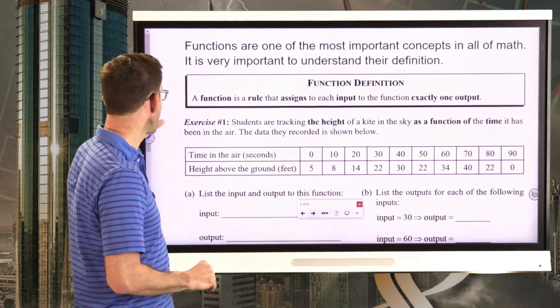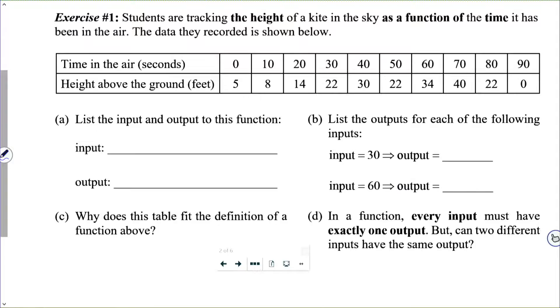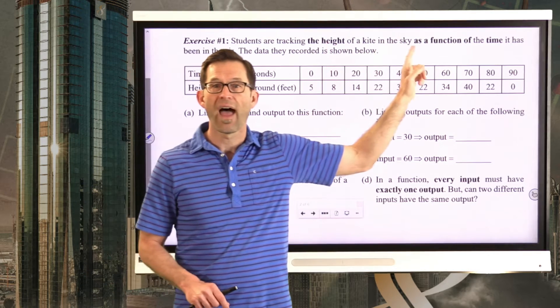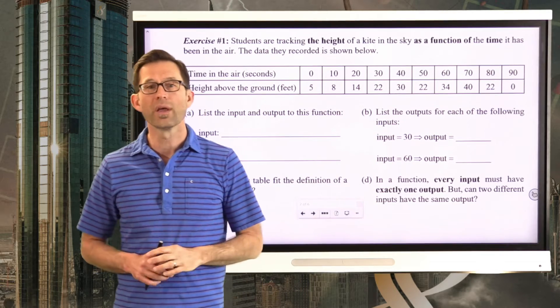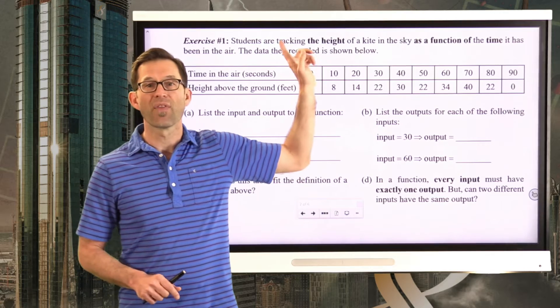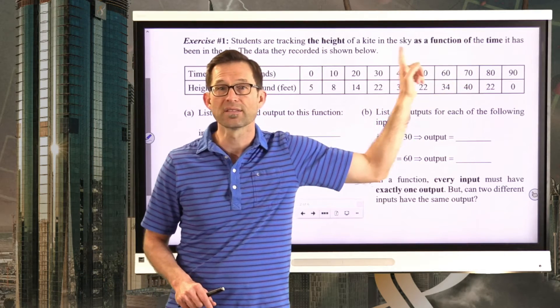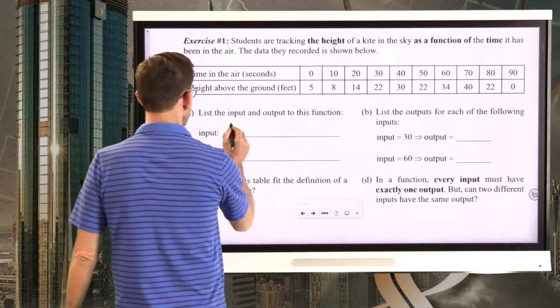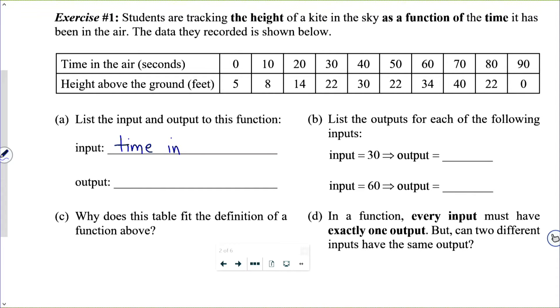Let's take a look at this idea of a function in exercise number one. Students are tracking the height of a kite in the sky as a function of the time it has been in the air. The data they recorded is shown below. Letter A lists the input and the output to this function. First, take a look at the language itself. The height as a function of the time. When you see a phrase like that, blank as a function of blank, it means that the height is the output and the input in this case is time.